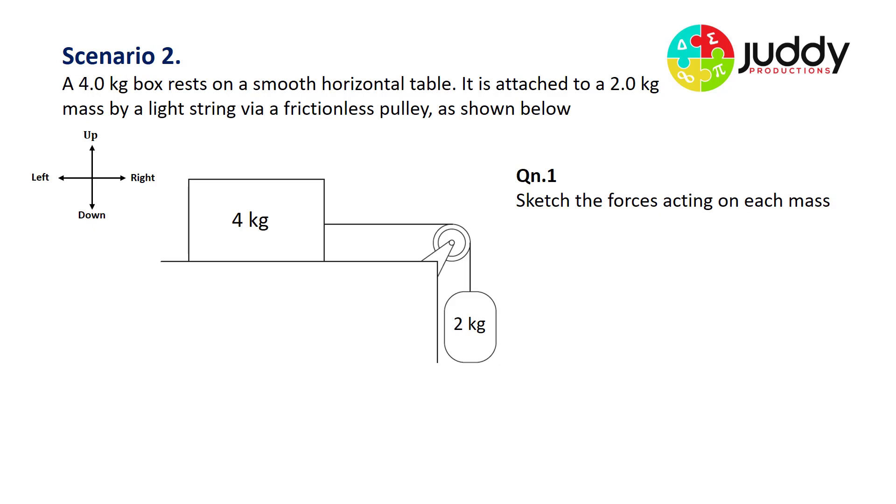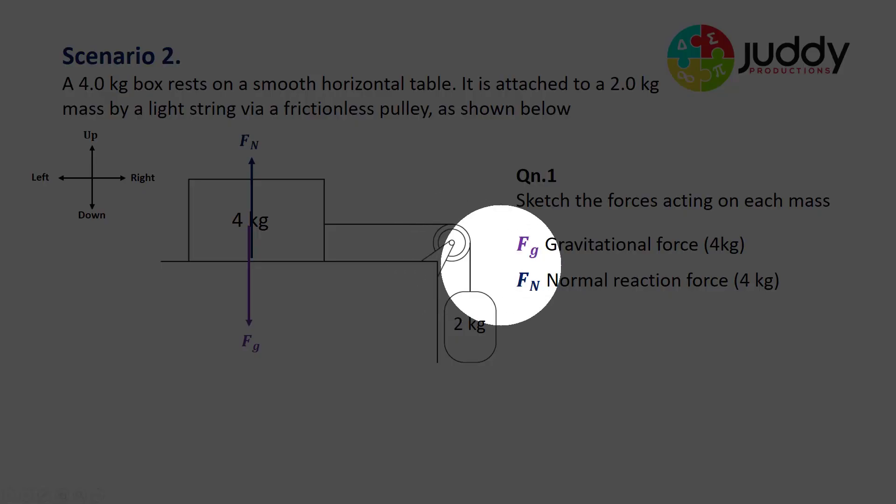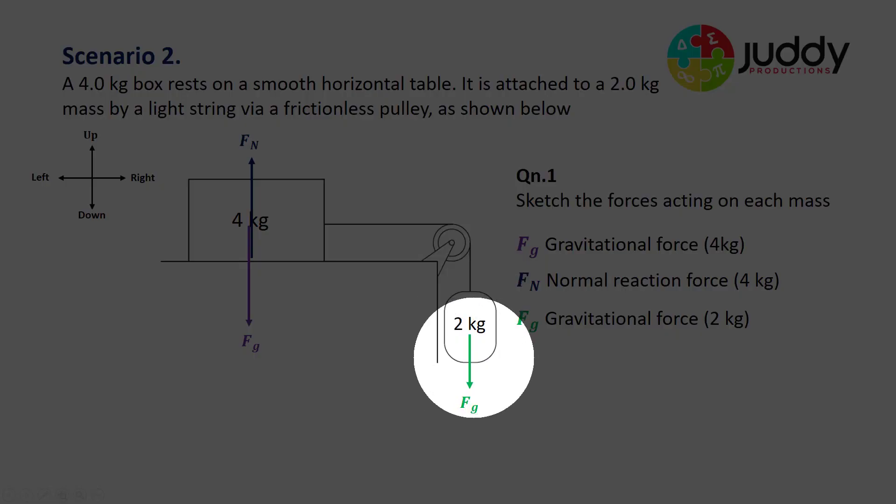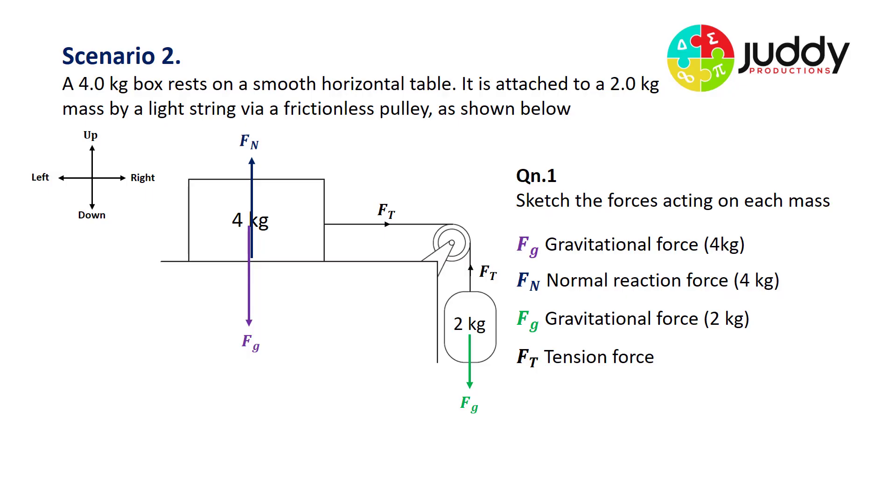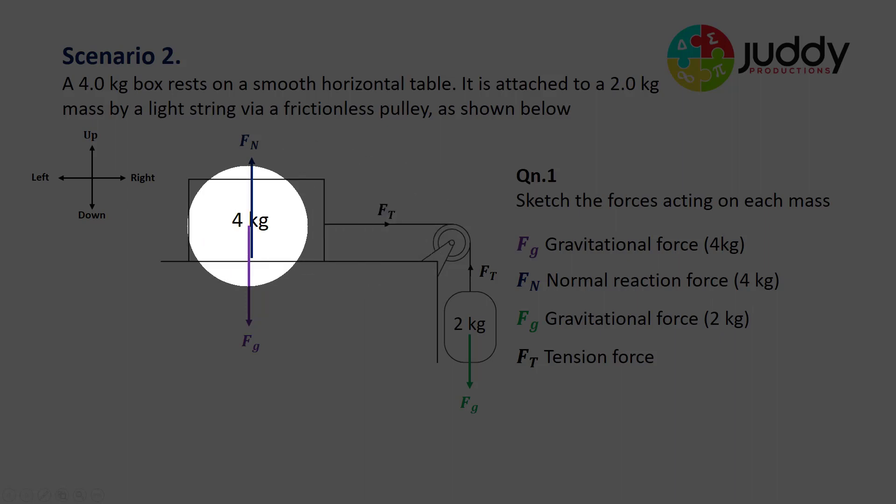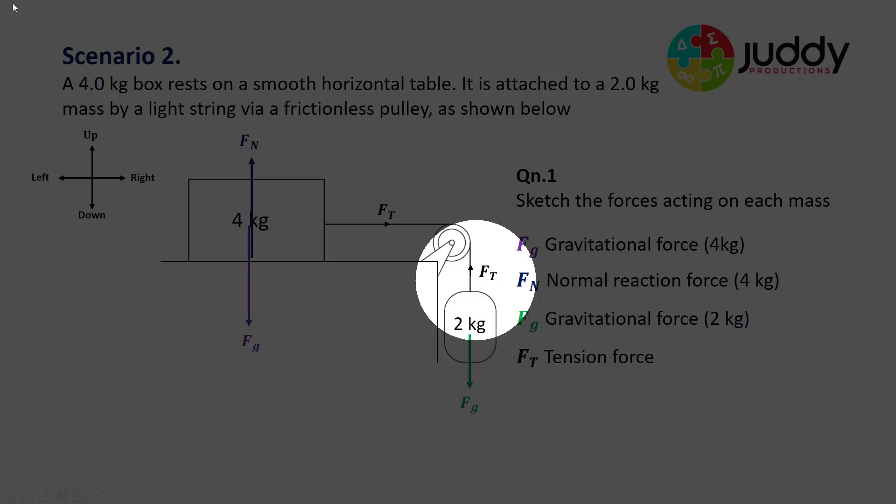First, let's consider the four kilogram mass. There's a force due to gravity Fg. All objects are attracted towards the earth. Opposing that is the normal reaction force Fn. These two forces are equal in magnitude but opposite in direction. The two kilogram mass also has a force due to gravity attracting it to the earth, colored green to distinguish it from the four kilogram mass. Two forces that aren't always easy to see are the forces due to tension. On the horizontal section of our string is a tension force pulling the four kilogram mass to the right, and at the bottom we have a tension force opposing the two kilogram mass falling, pulling upwards.